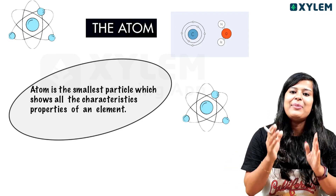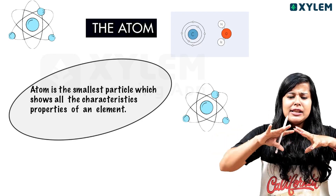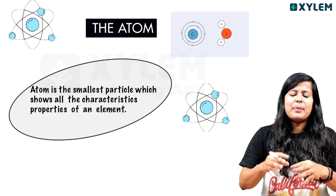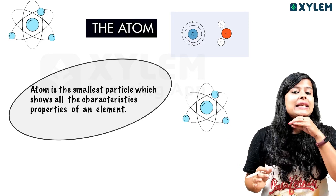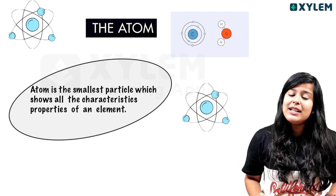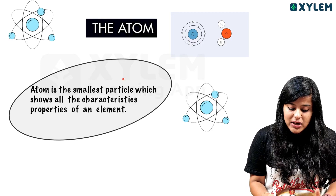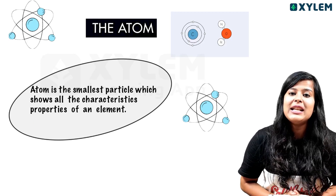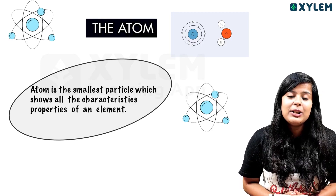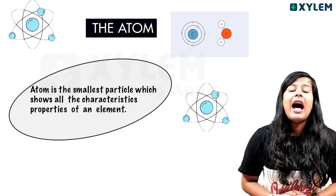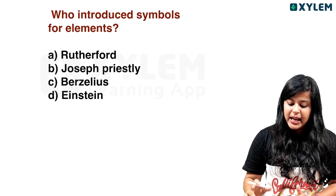That's why we consider one element — it has the same properties. The smallest particle showing all the characteristic properties of an element is the atom. Ready? Set?